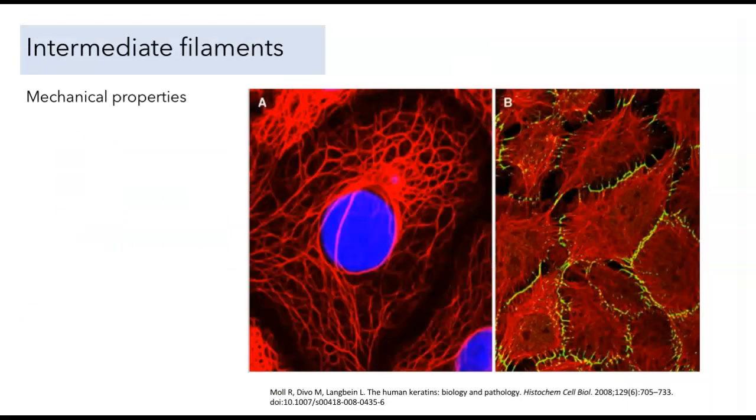Intermediate filaments lack polarity, and for this reason they won't be appropriate for use as highways for intracellular transport. Instead, when we think about the function of intermediate filaments, we think about their mechanical properties.